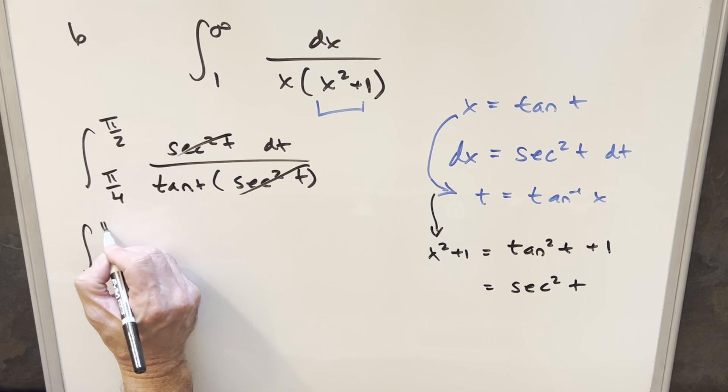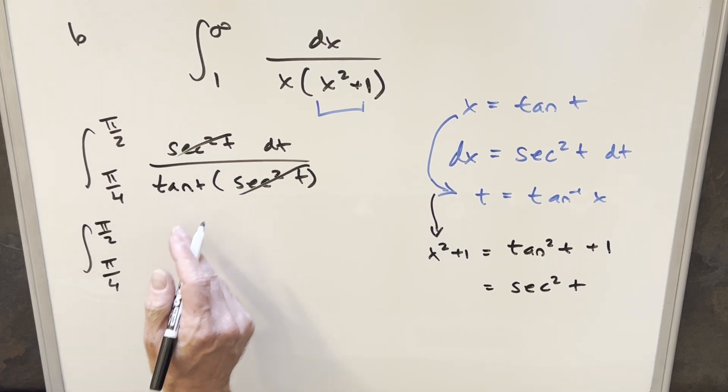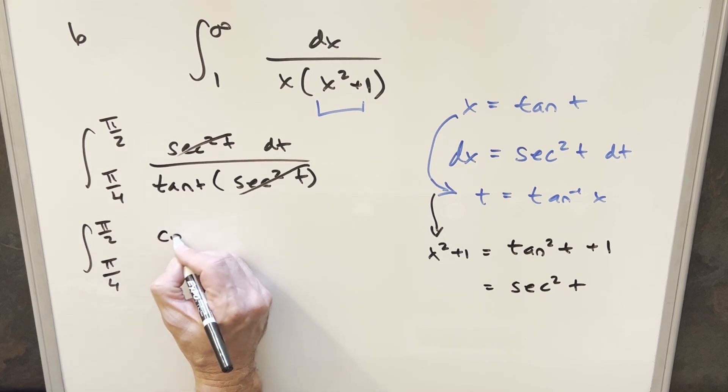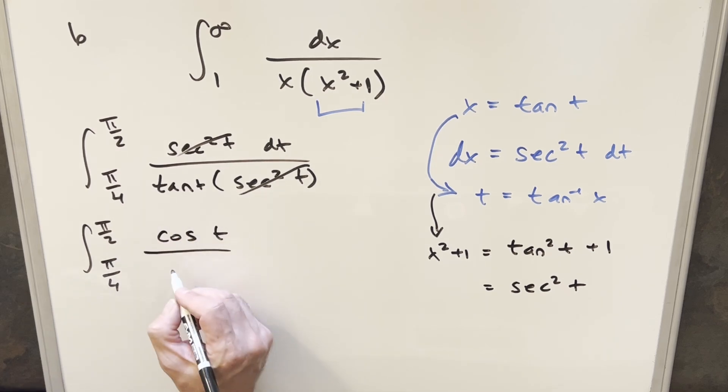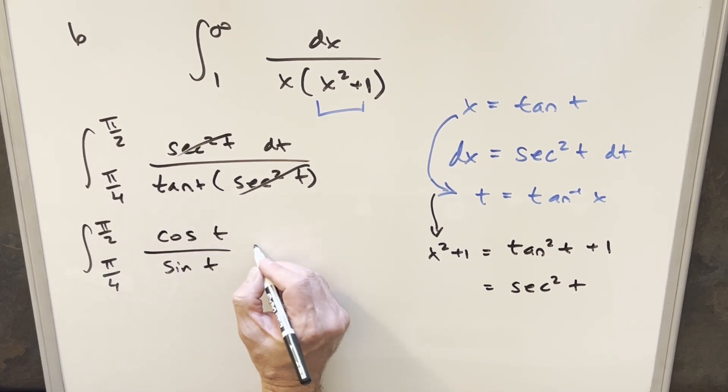Tan of t, I can write that as cotangent of t. But I think instead let's write it in terms of cosines and sines. So we'll do it as cosine t over sine of t for cotangent.